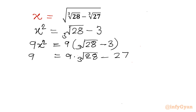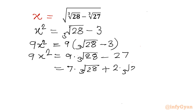Left hand side is 9x squared. Now I will write the RHS: 9 times cube root 28 as 7 times cube root 28 plus 2 times cube root 28, and minus 27 we can write as minus 28 plus 1.